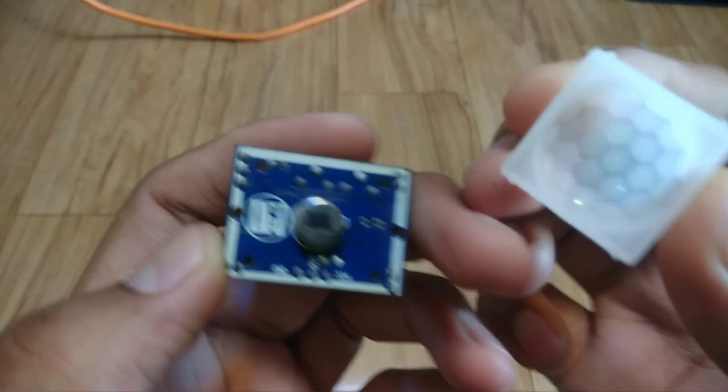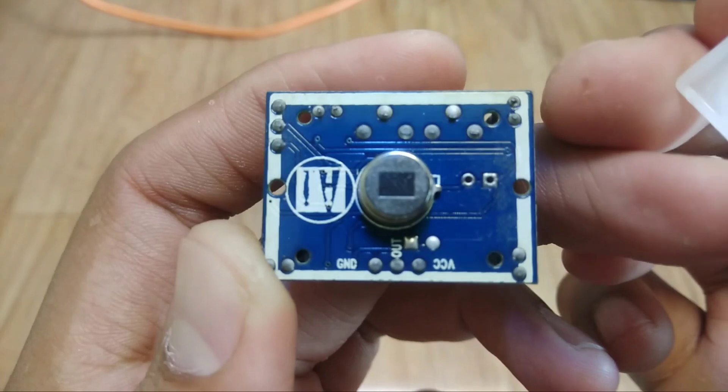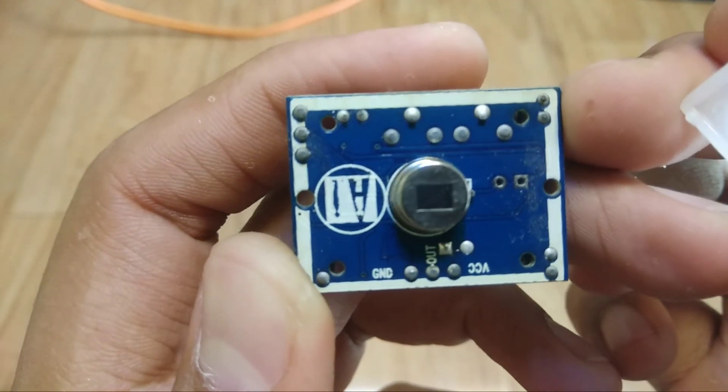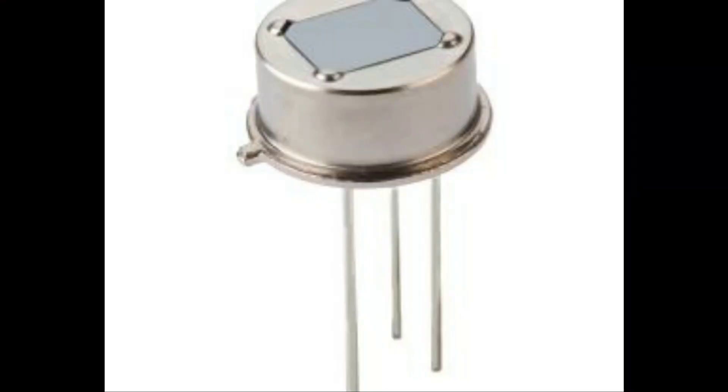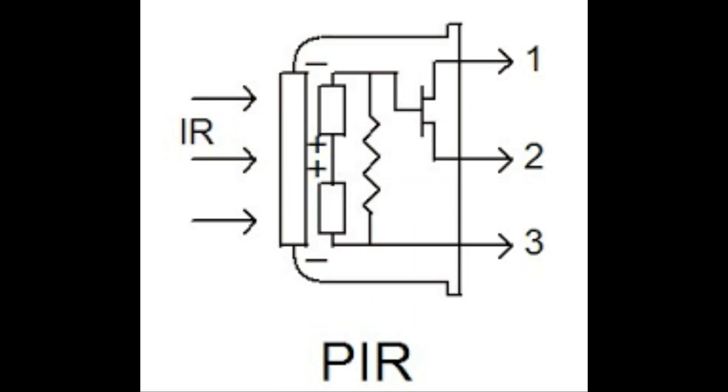This is the main heart. This sensor called pyroelectric sensor. This can detect level of infrared radiation. Every object emits some low level radiation and hot objects radiate more radiation. The PIR sensor itself has two slots in it. Each slot is made of special material that is sensitive to IR.